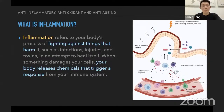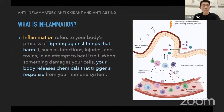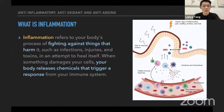Inflammation is basically referring to our body's natural process of fighting against things that actually harm it. For example, whenever there's an infection, injuries, or toxins attempting to intrude our body, our body will attempt to heal itself. This is a mechanism — when something damages our cells, our body releases chemicals that trigger a response from our immune system.